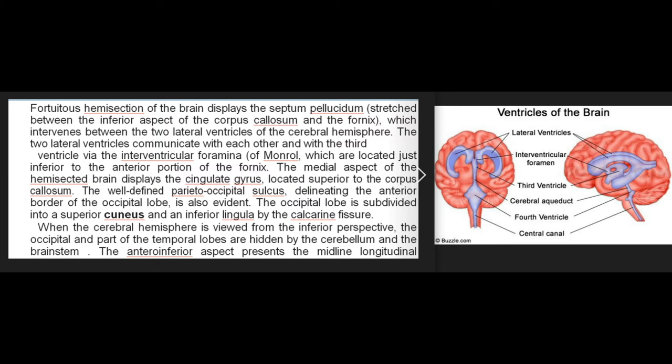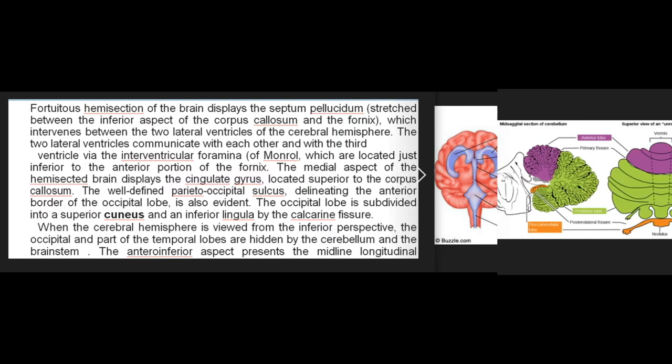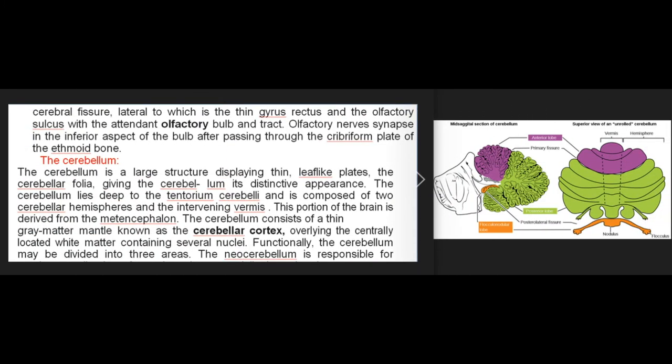The medial aspect of the hemisected brain displays the cingulate gyrus located superior to the corpus callosum. The well-defined parieto-occipital sulcus delineates the anterior border of the occipital lobe. The occipital lobe is subdivided into a superior cuneus and an inferior lingula by the calcarine fissure. When viewed from the inferior perspective, the antero-inferior aspect presents the midline longitudinal cerebral fissure, lateral to which is the thin gyrus rectus and the olfactory sulcus, with the attendant olfactory bulb and tract. Olfactory nerve fibers synapse in the inferior aspect of the bulb after passing through the cribriform plate of the ethmoid bone.